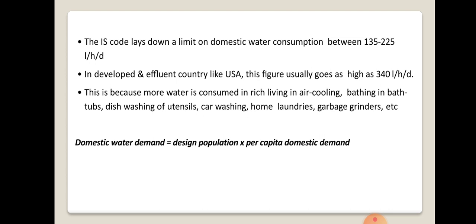How do you calculate the domestic water demand? The domestic water demand is calculated by finding the total design population and multiplying it by the per capita demand. When you know the water required by one person multiplied by the total population, you can get the total domestic water demand of any community.